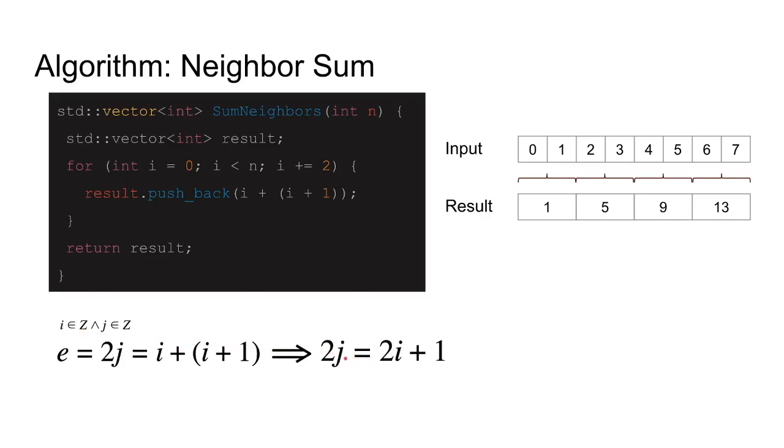This implies that 2j equals 2i plus 1, getting rid of the parenthesis. 2j equals 2i plus 1. This implies that if I bring 2i to the left and factor out 2, I should get 2 multiplied by j minus i equals 1. Now dividing both sides by 2, I get j minus i equals 1 over 2. Now look at this.